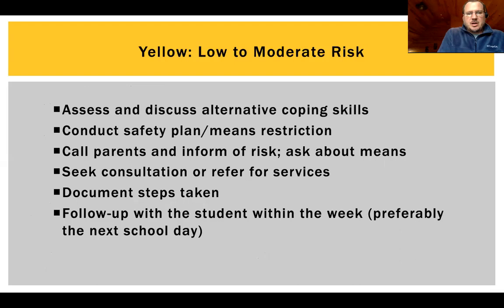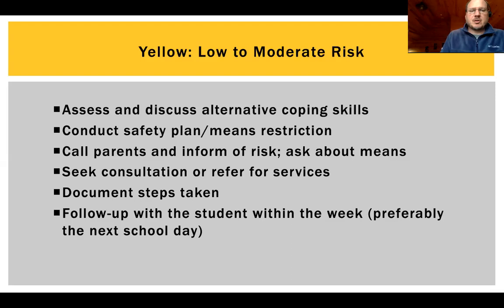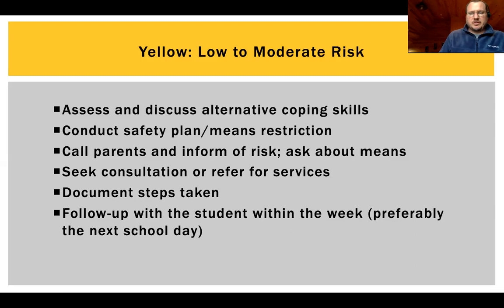Yellow is low to moderate risk. Here we assess and discuss coping skills, conduct an SPI safety plan, and also address means reduction. At this level we typically call parents with very few exceptions. We ask about what means they are aware of in the home. Our students are instructed to seek consultation from us in these cases. We document what we've done, and then follow up with students within the week — ideally the very next day.